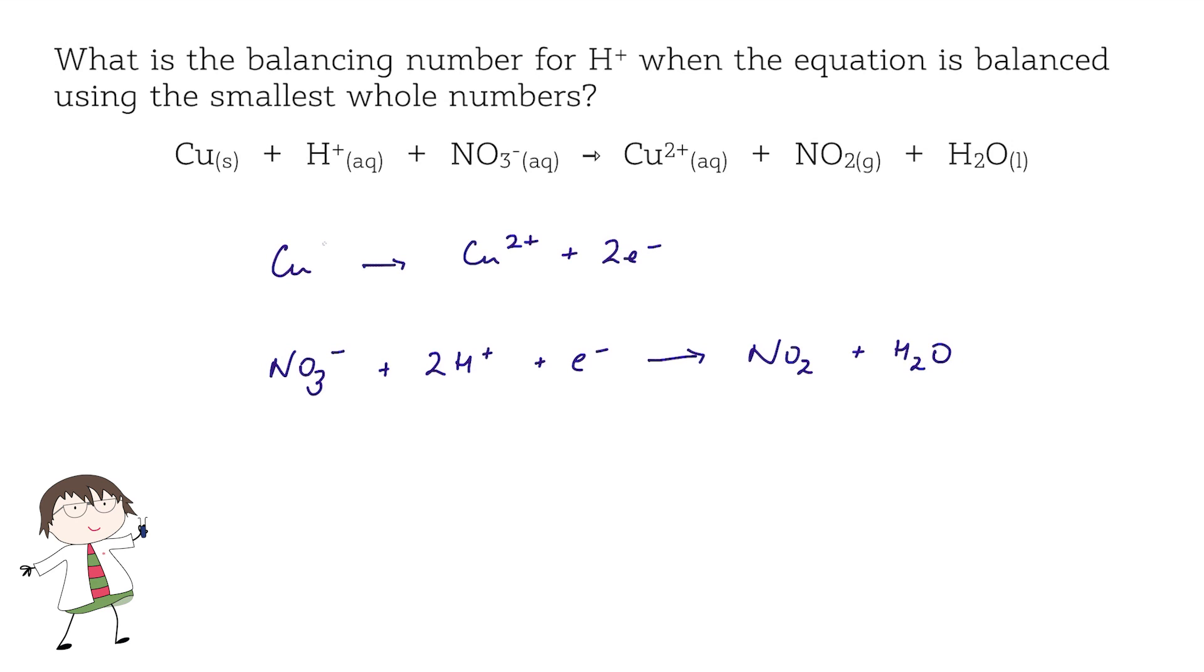Now we can combine the half equations in such a way as the electrons cancel out, which means that I need to take my reduction half equation and multiply it by two.